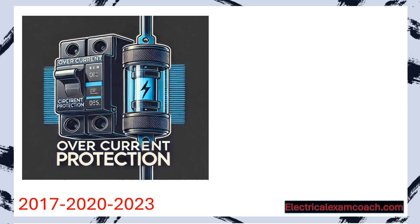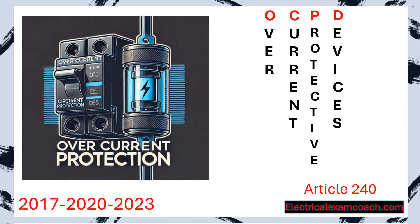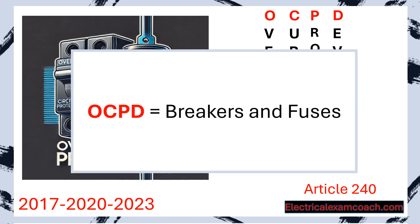Welcome back. I am the Electrical Code Coach from ElectricalExamCoach.com, and this is lesson 8.1 in our video series. We're going to be in Article 240 and we're going to be learning all about overcurrent protective devices. You'll hear me use the term OCPD throughout the rest of the program — all it stands for is overcurrent protective devices. To simplify it even further, anytime you see OCPD, it just means breakers and fuses.